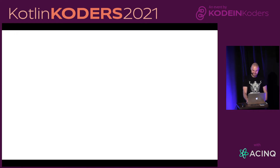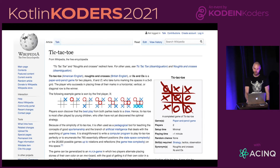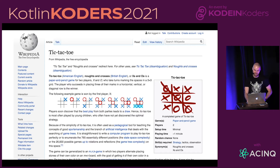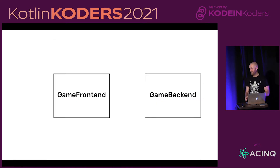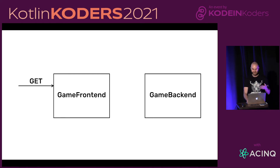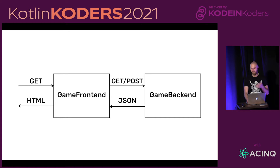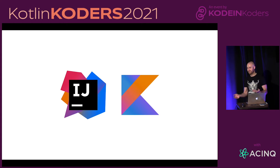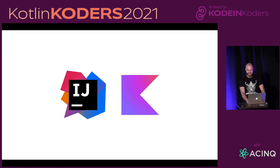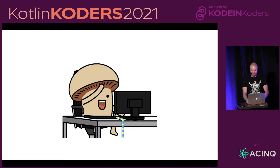So that's explaining the title. As a motivating problem, I'll write a simple board for a tic-tac-toe game, also known as noughts and crosses. The architecture will be: a game frontend receives HTTP requests from the browser, forwards them as GET/POST to a backend, backend sends back JSON, frontend renders HTML and sends it back to the browser — quite simple. I'll use IntelliJ and Kotlin for this.